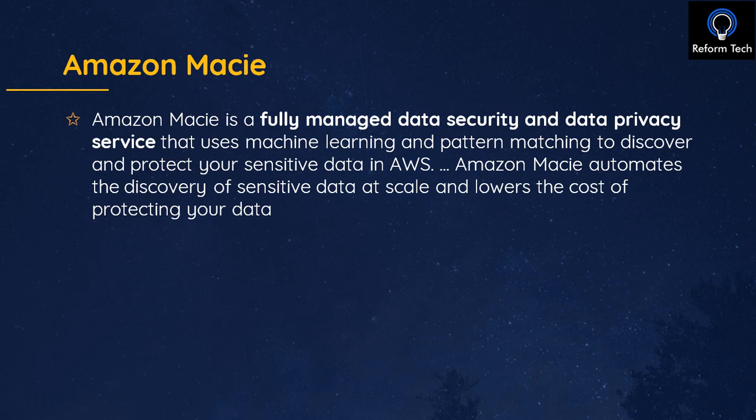Next is Amazon Macie, a fully managed data security and data privacy service. For example, it discovers and protects sensitive data stored in AWS S3 buckets. It identifies sensitive data — like personally identifiable information or health information — by running discovery jobs, which you can schedule to monitor new data added to your buckets.